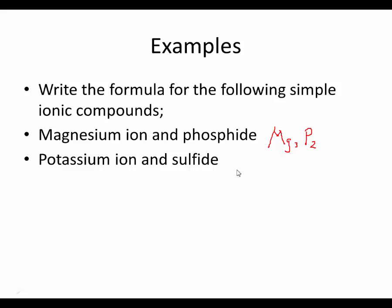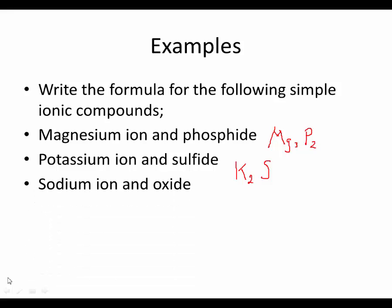As for the potassium ion and the sulfide ion: K one plus and S two minus. This one's a little bit easier — we need two potassiums. You know it's an ionic compound because they're both ions, one's a cation and one's an anion, but we don't need to show that they're ions when we write the formula — that's understood. We did this last unit. I think they got it.